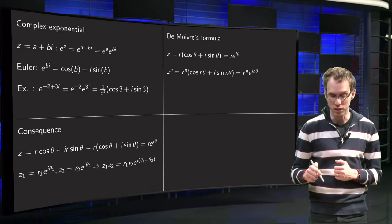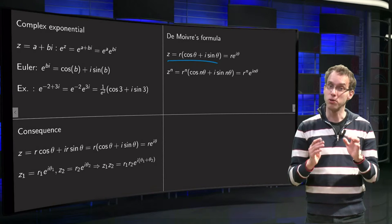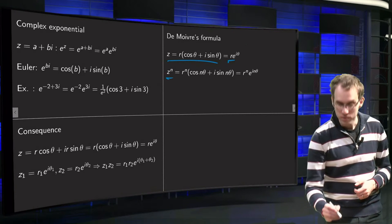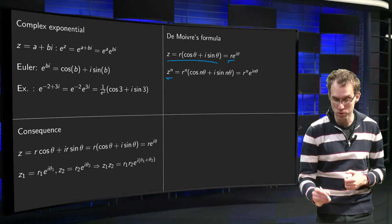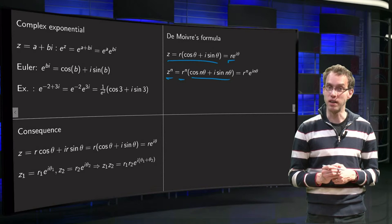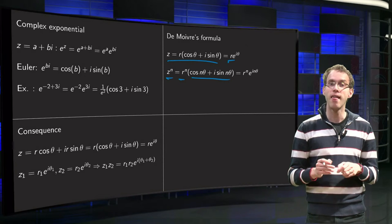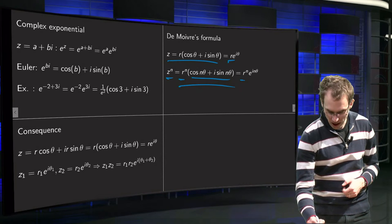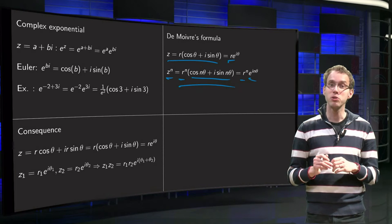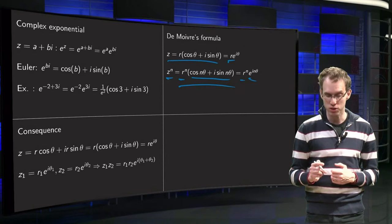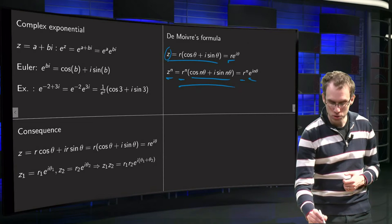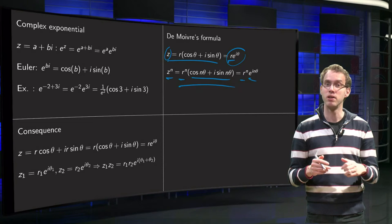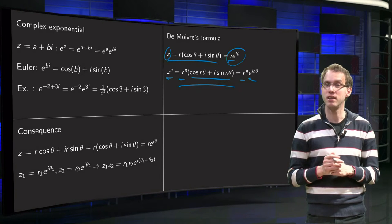De Moivre's formula also becomes much easier. Writing z = r(cos θ + i sin θ) = r e^(iθ), taking the nth power gives r^n e^(inθ), which means z^n = r^n (cos nθ + i sin nθ). If you know how to manipulate exponentials you get the De Moivre formula immediately, and it is much easier to memorize.